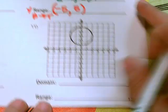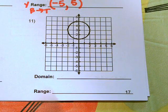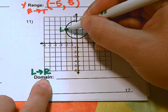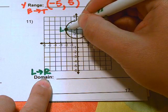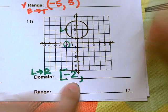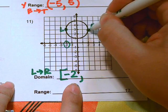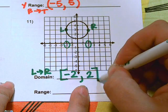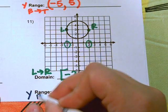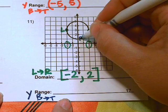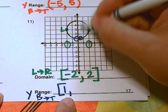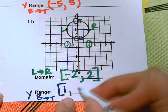Go ahead and pause the video and try the last one. For the domain, the leftmost point has an x-value of negative 2 — we use a bracket because it's solid. The rightmost point has an x-value of 2. For the range, the domain is x-values and range is y-values. The bottom y-value is 1 — bracket because it's solid. The top y-value is 5.